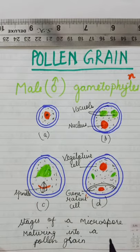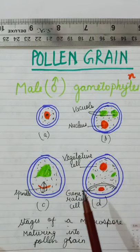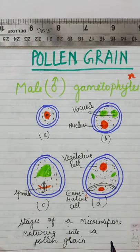Microspore is the first cell of gametophytic generation. It starts germinating in situ, meaning when it is enclosed inside the microsporangium or pollen sac.